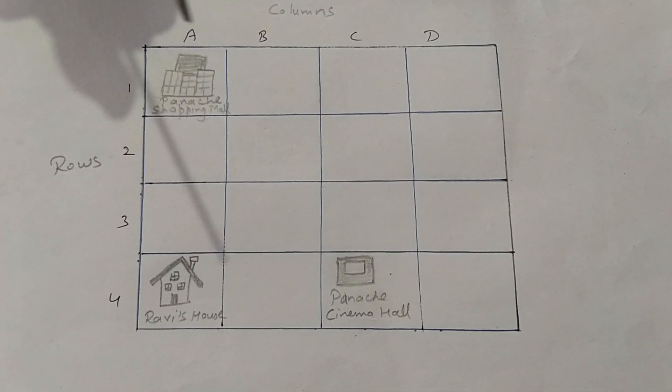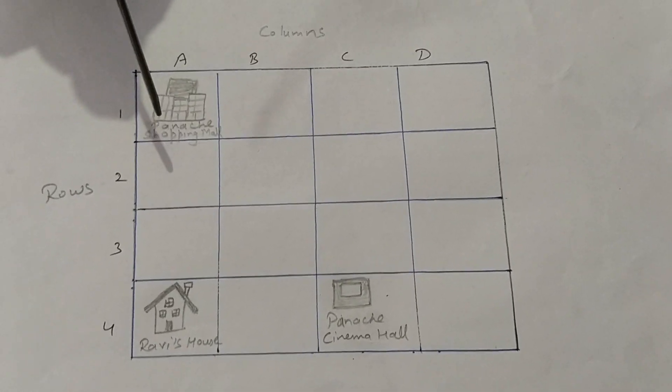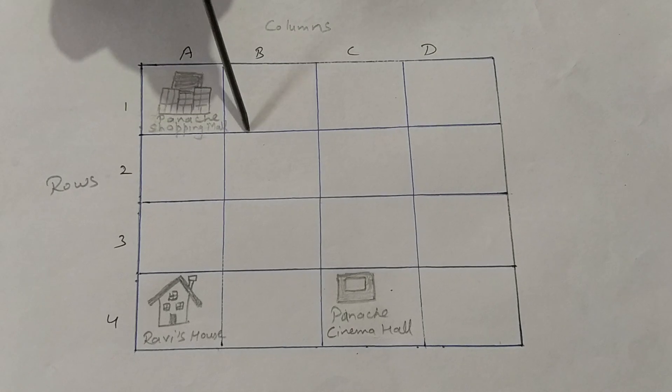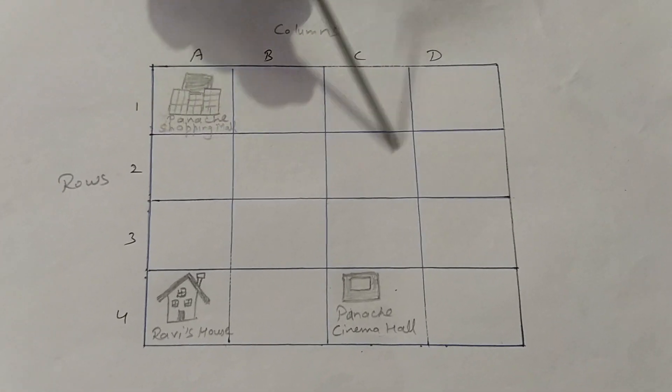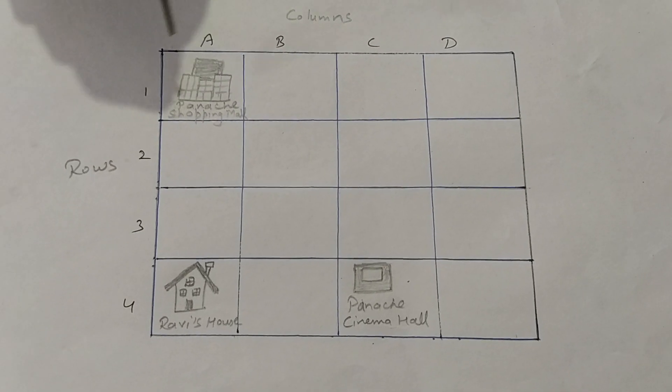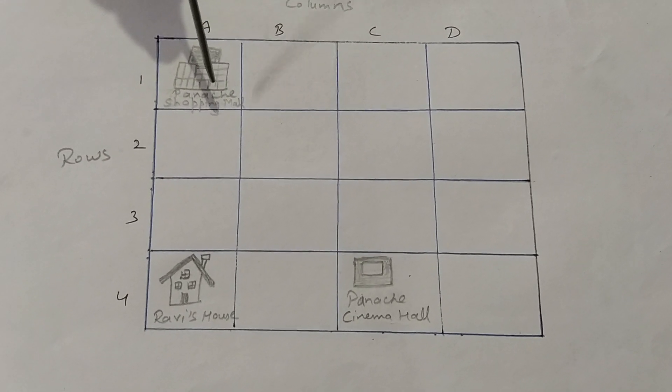See, a coordinate is the point in the grid where latitudes and longitudes intersect each other. This coordinate helps us locate any place or point on earth.